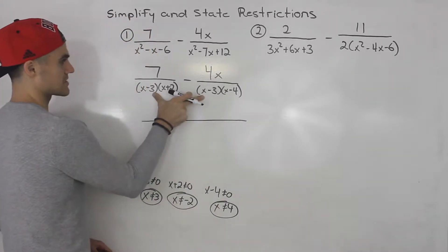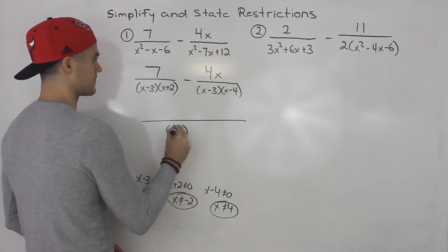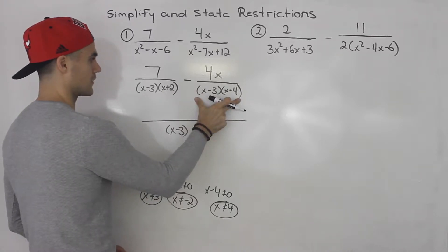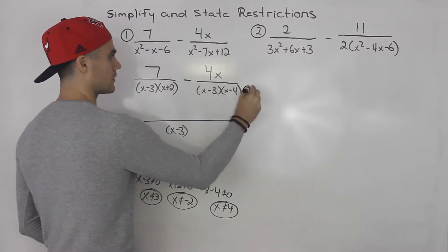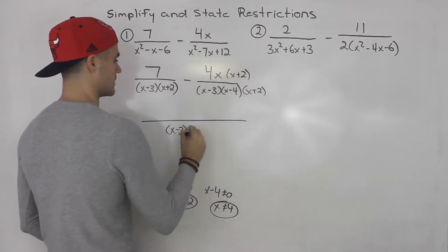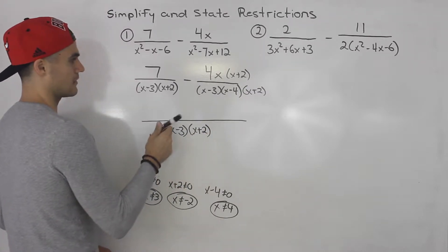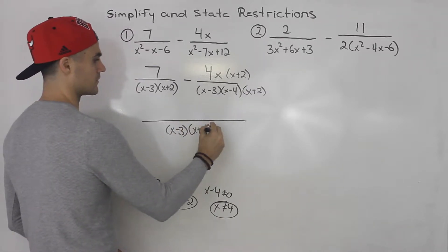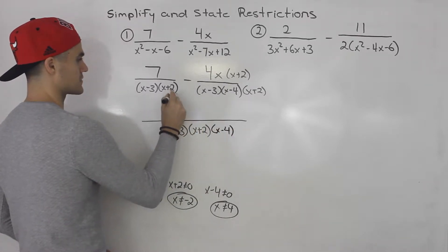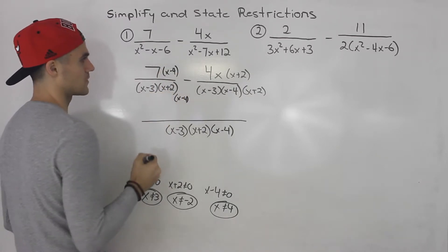Notice that x minus three is common in both, so that will be included. We have an x plus two in the first but not the second, so we'll need to multiply that fraction by x plus two on top and bottom. There's also an x minus four in the second but not the first, so we multiply that fraction by x minus four on top and bottom.